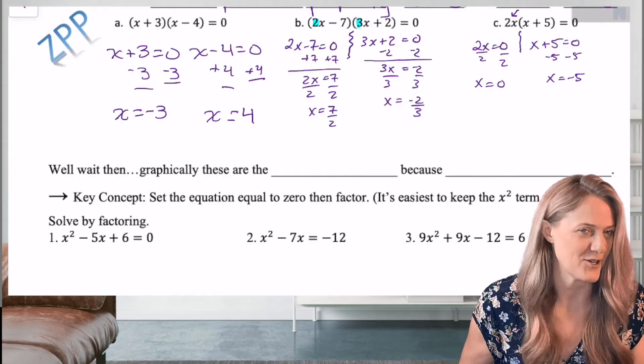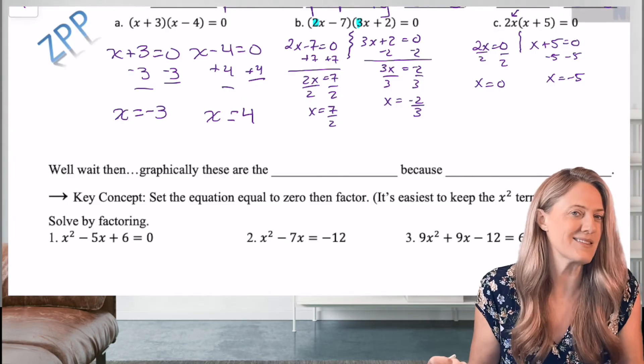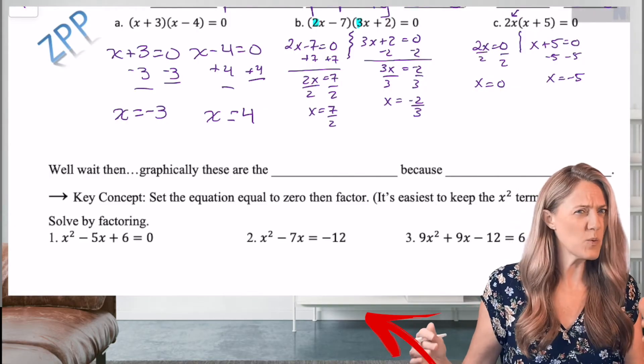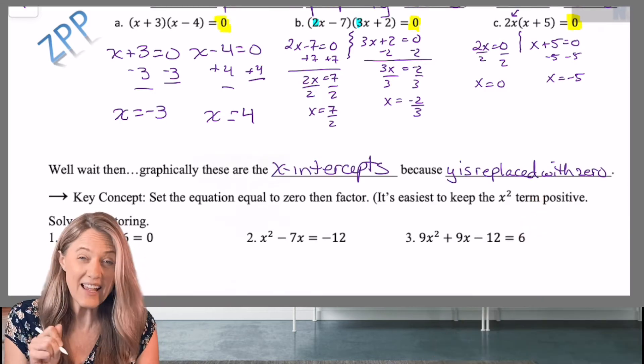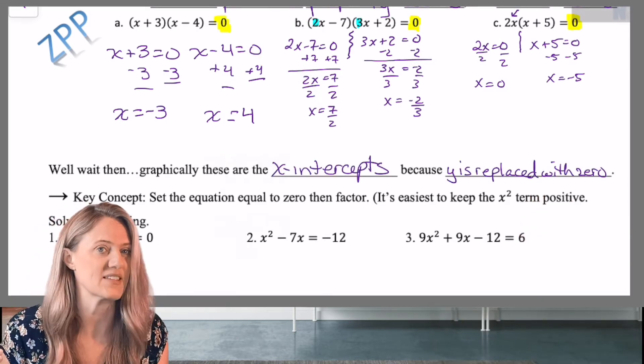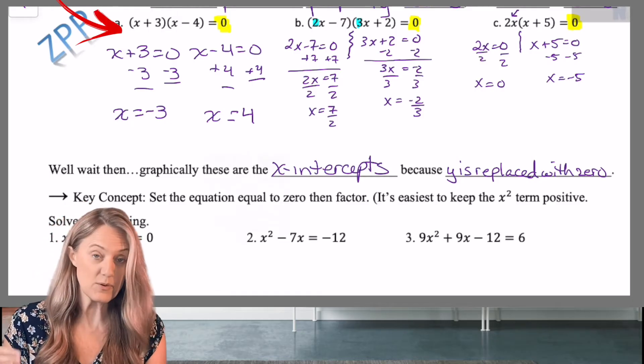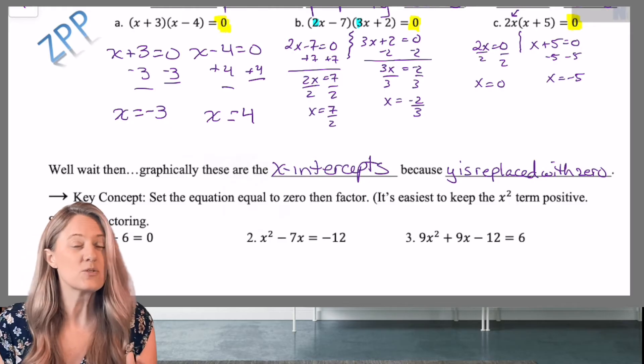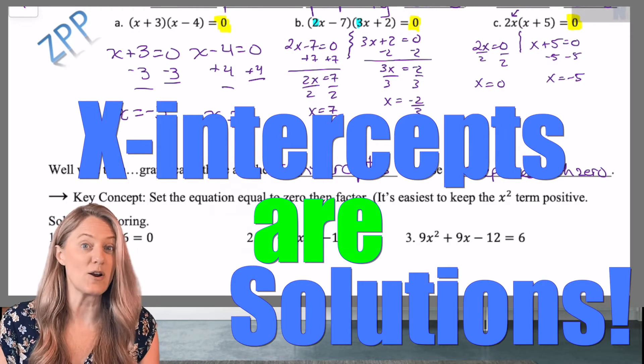Well, wait, did this already occur to you that graphically these would be the X intercepts? And why is that? Think about it. What has changed in the equation? Where's Y? Well, Y has been replaced with zero. So I highlighted that in yellow to just emphasize, right? If we were graphing this, it would say X plus three times X minus four equals Y. But we're just solving it. So now we have X intercepts are solutions to our equation.